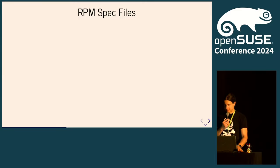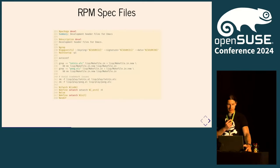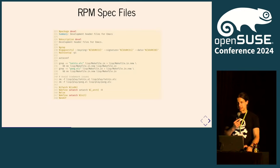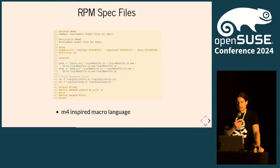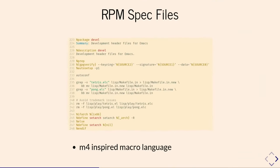RPM spec files. I guess since you're here you maybe know them, maybe love them, probably hate them. This is more or less how a typical RPM spec file looks — not overly complicated but with all these funky macros. Unfortunately, RPM spec files are more or less just a build description. The macro language is something custom — it's sort of inspired by M4, but it's not M4, which is a bummer because you can't use M4 to parse it.